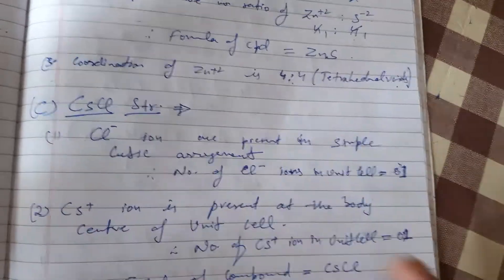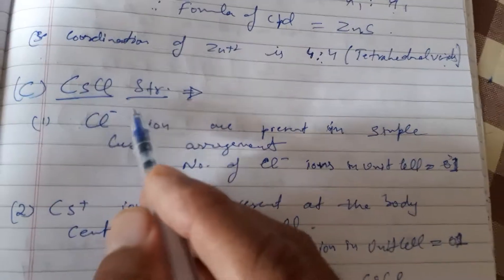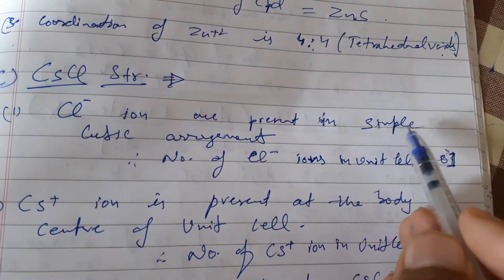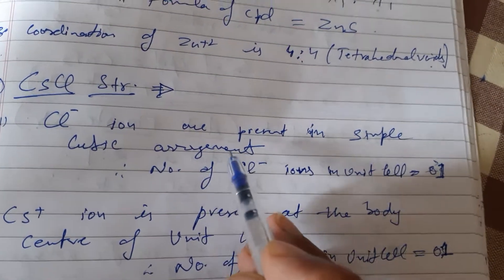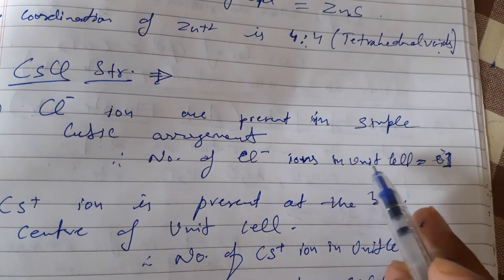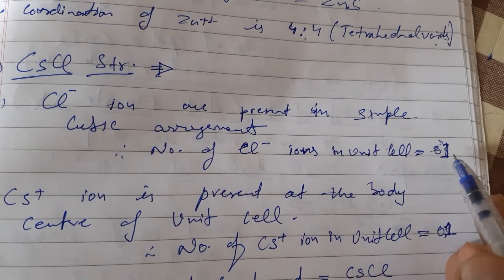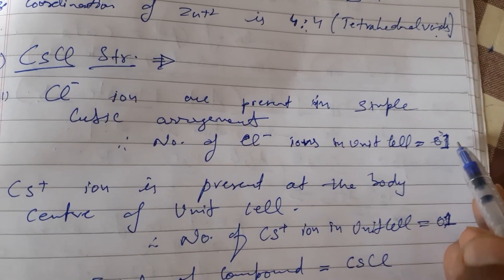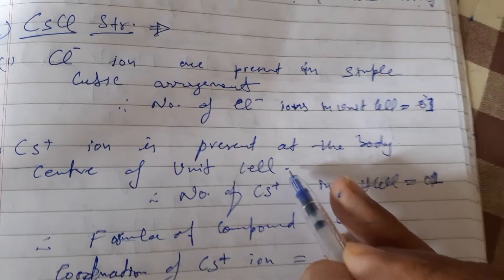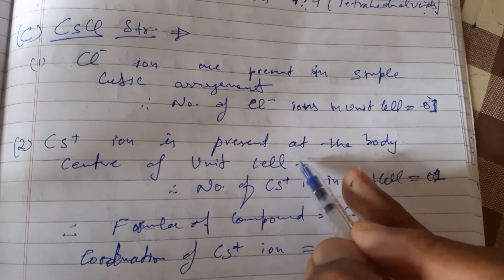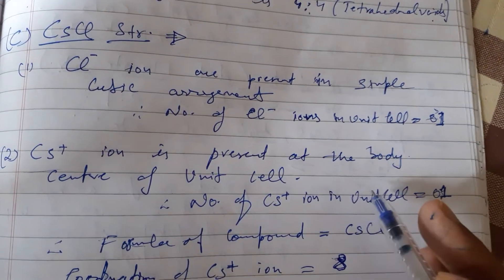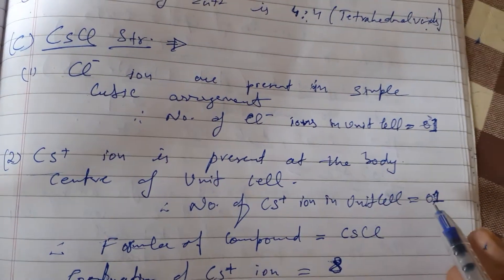The third category of AB type is cesium chloride. In cesium chloride, chloride ions are present in simple cubic arrangement — meaning chloride ions are at the eight corners of the cube. Therefore the number of chloride ions in the unit cell is equal to one. The cesium ion is present at the body center of the unit cell, so the cesium ion count is also one.